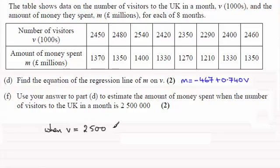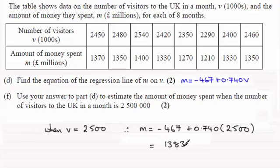Okay, so we've got 2,500,000 and we have to divide that by a thousand to give us the value of V. And so therefore what we've got is M is going to equal -467 + 0.740, and that's multiplied by our value of V which is 2,500. And if you work that out you get 1,383.